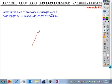If you are looking at an isosceles triangle, okay, so here's my isosceles triangle. It says it has a base length of 60.